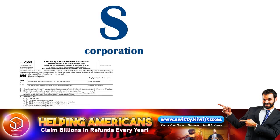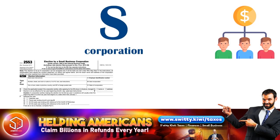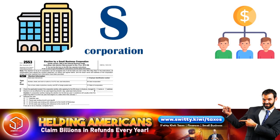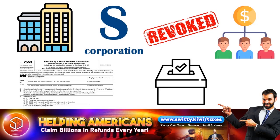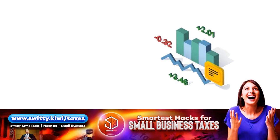All shareholders must consent to the S-corporation election by signing Form 2553 — that requires 100% consent. Conversely, to revoke the S-corp election, consent from holders of more than 50% of the corporation's shares is required. For the initial election you need full consensus across the board; for revocation only a majority of shareholders is needed.